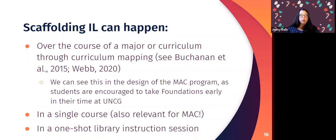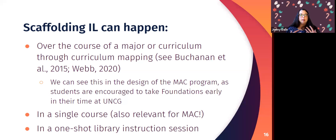Scaffolding can happen over the course of a major or curriculum, often through curriculum mapping. We can see this in the MAC program design — the ideal situation is that students take a foundations course early in their time at UNCG, and then a health and wellness competency course later, so we're building scaffolding into the program itself. Competencies are also meant to go beyond MAC into major coursework. This can also happen within a single course throughout the semester to activate and incrementally build skills.